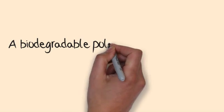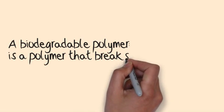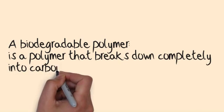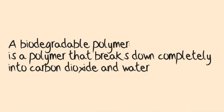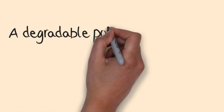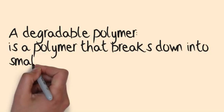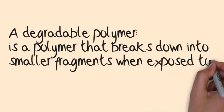A biodegradable polymer is a polymer that breaks down completely into carbon dioxide and water. A degradable polymer is a polymer that breaks down into smaller fragments when exposed to light, heat, or moisture.